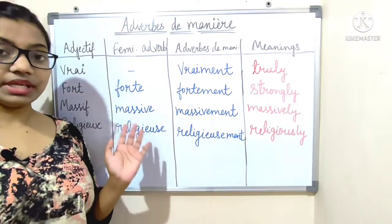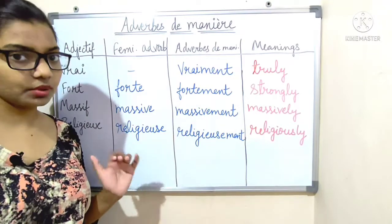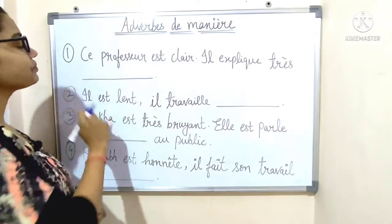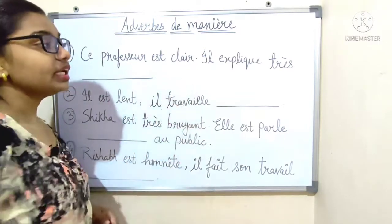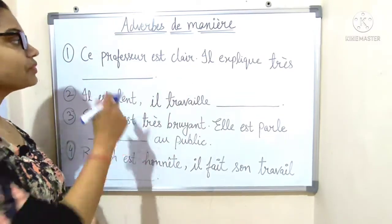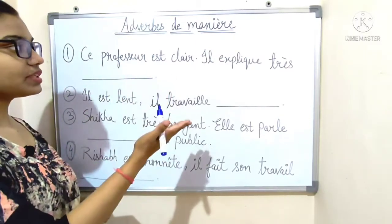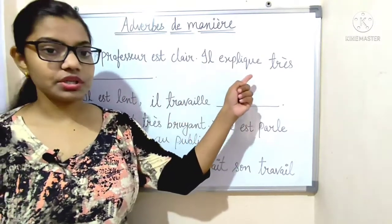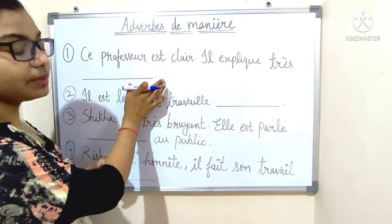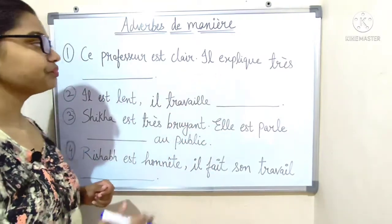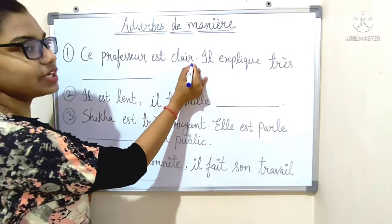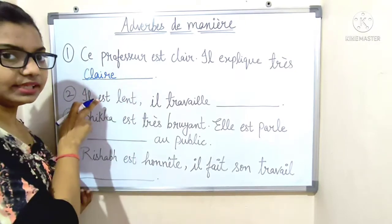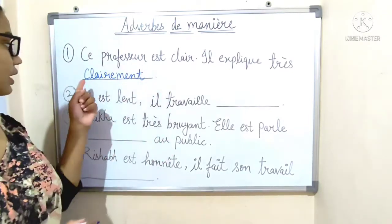Now we do an exercise for better understanding. Number one: 'Ce professeur est clair, il explique très clairement.' 'Clair' ends with the consonant R, so we make it feminine: C-L-A-I-R-E, then add '-ment': 'clairement'. The professor explains very clearly.